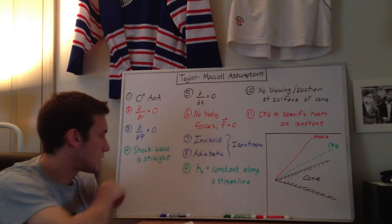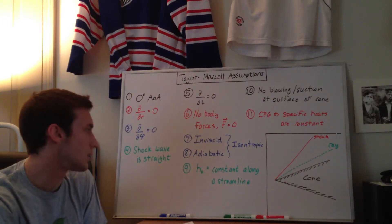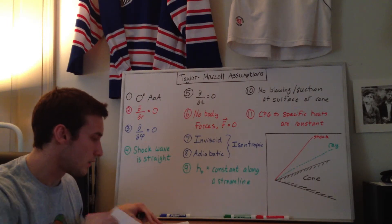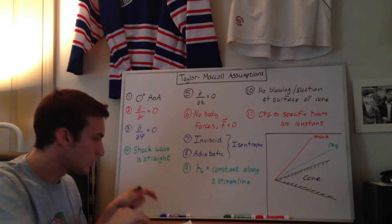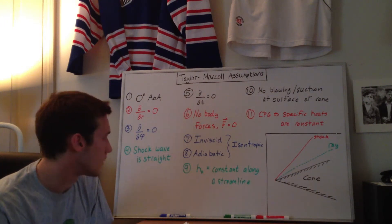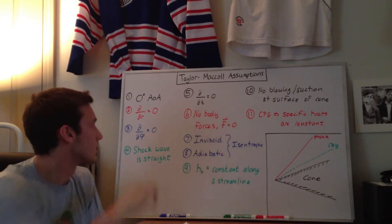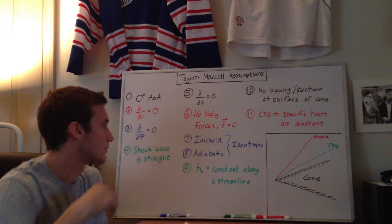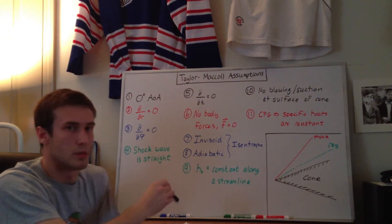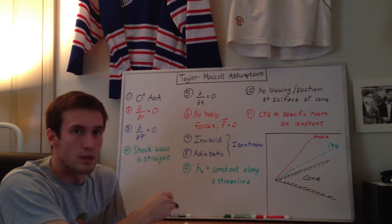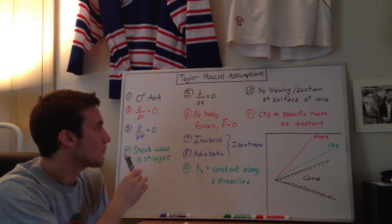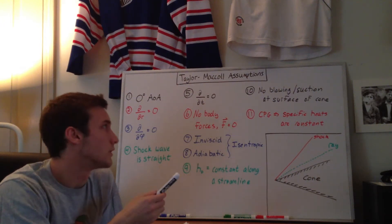Number nine is that the total enthalpy is constant along the streamline. This comes from inviscid, adiabatic, steady flow with no body forces — all from the other assumptions we made. This comes into play in Crocco's equation with the gradient of total enthalpy, allowing for the irrotational assumption.